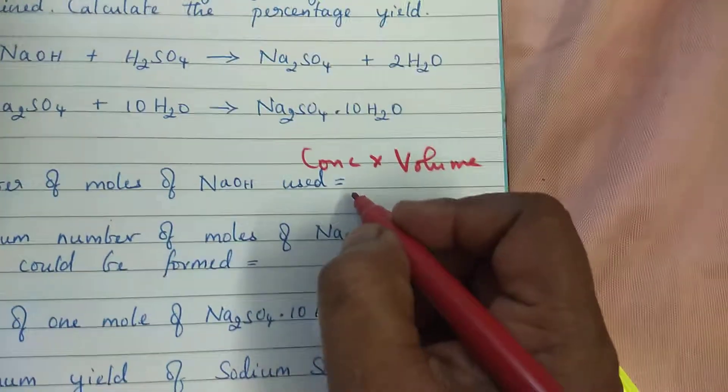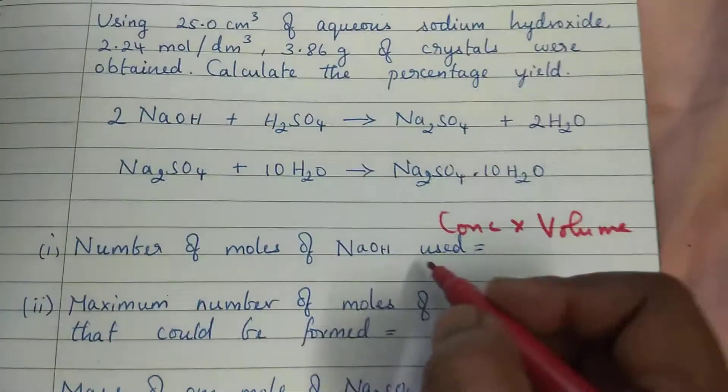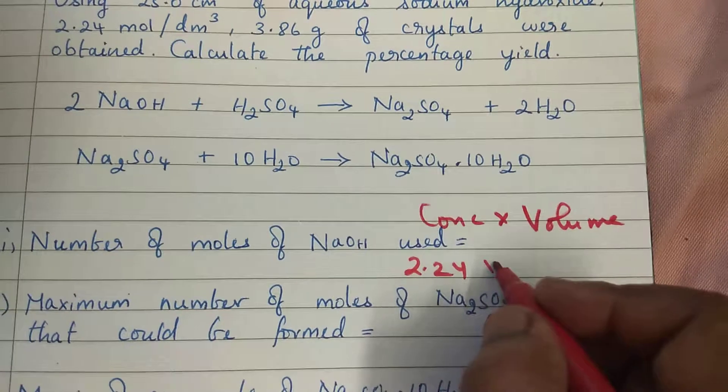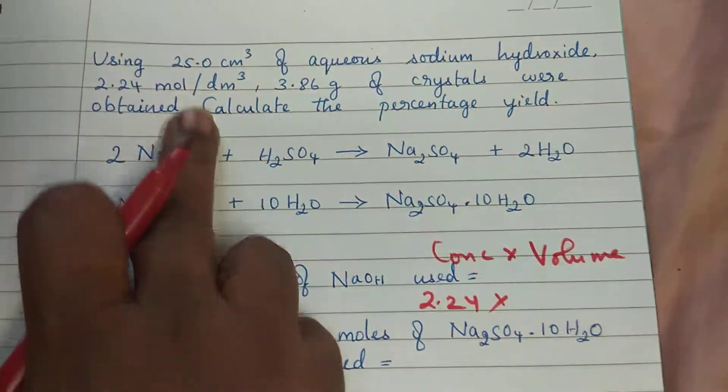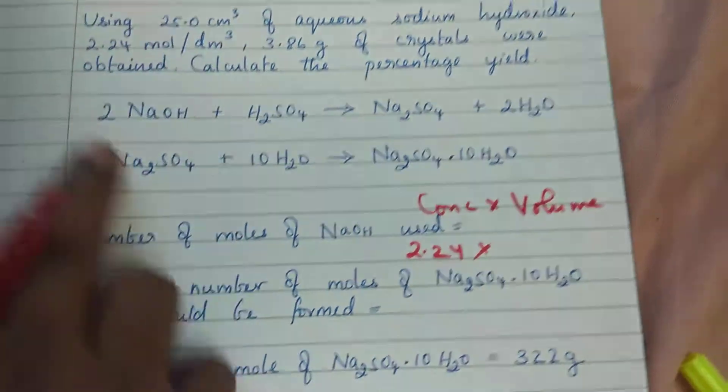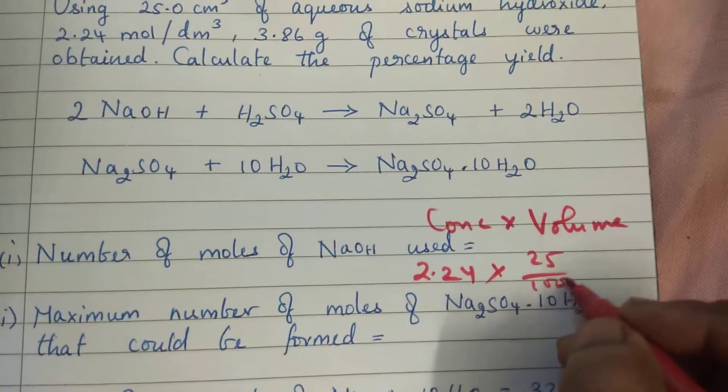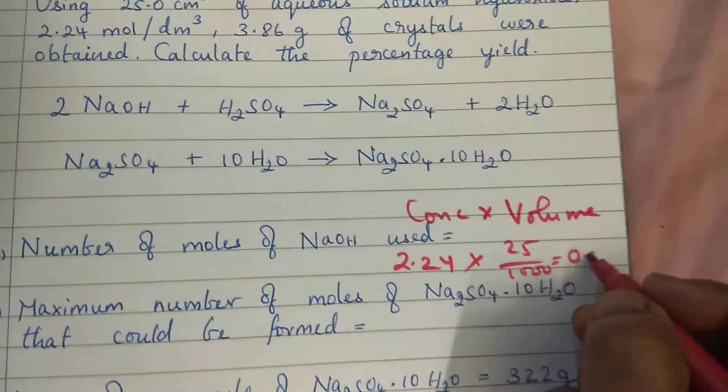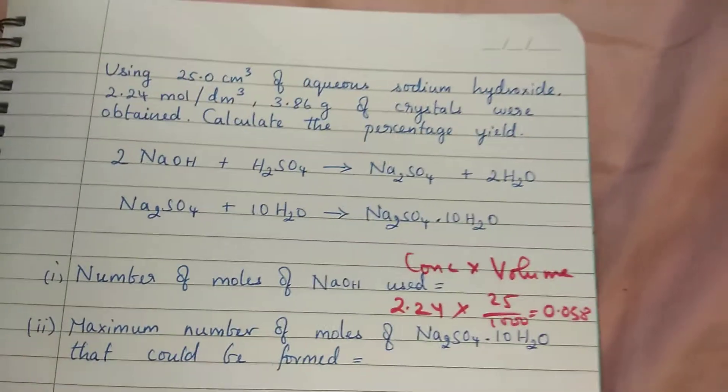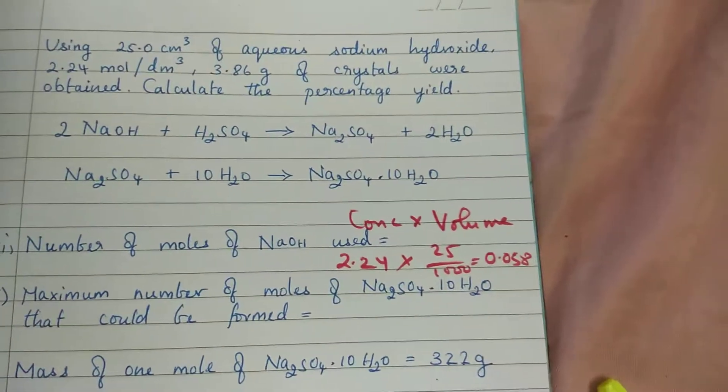What is the concentration? It's given in the question, 2.24 mole per decimeter cube. That means 2.24 into volume 25 centimeter cube. You need to calculate for decimeter cube, so 25 by thousand. So you will get 0.058 moles of NaOH you have used in this.